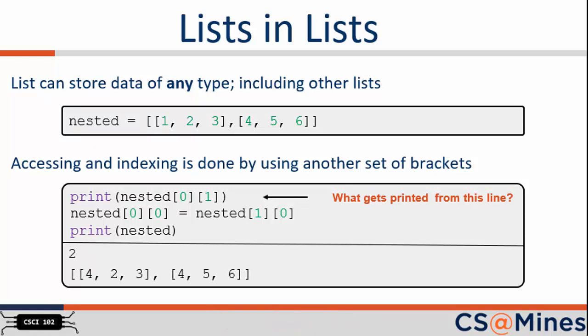Consider the output of the first print statement. The first bracket has an index of 0, which says to look at the first element in the list. The first element of the list is the list 1, 2, 3. The second bracket has an index of 1, which says to look at the second element in the list. So this will be the value 2. Thus, 2 is printed. The second print statement prints the entire list of lists after changing the first element of the first list to be the first element of the second list. In other words, the value 4 is copied to the memory address of where the value 1 used to be.